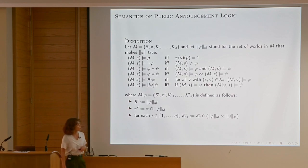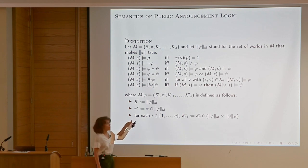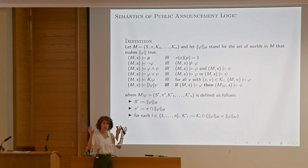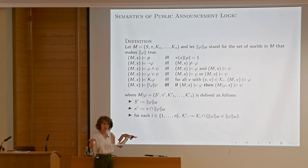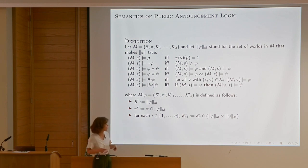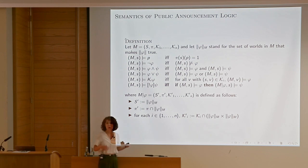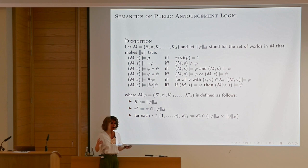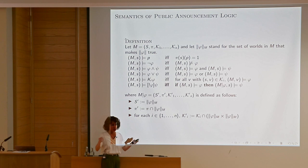There is also a nice generalization because public announcement is just one particular epistemic action. It influences epistemic states — what agents know — rather than the physical world. You can consider all sorts of epistemic events that are not public announcements: private announcements, secrets, gossip. There could be all sorts of epistemic actions that don't involve all agents at the same time.